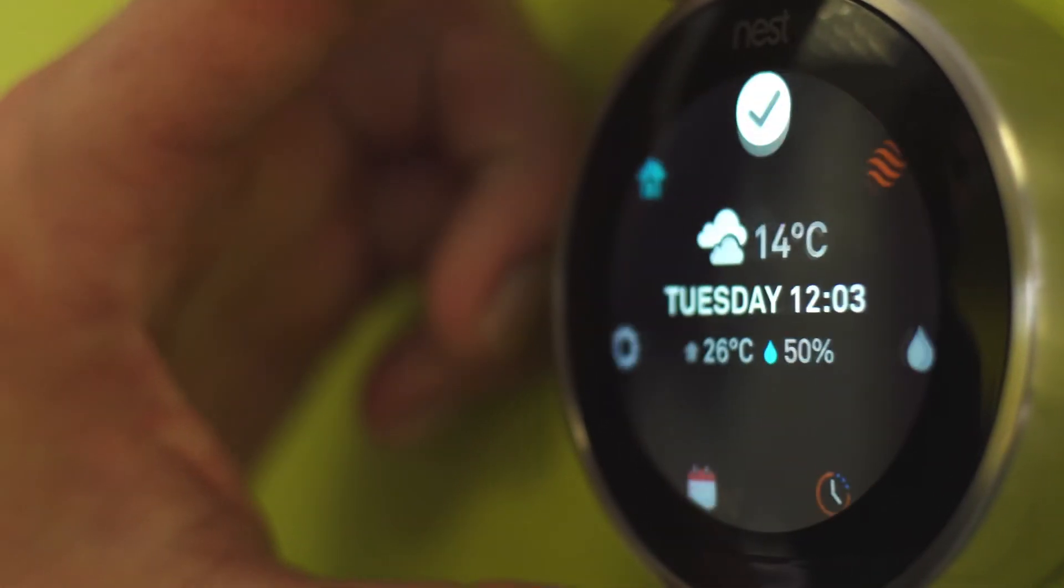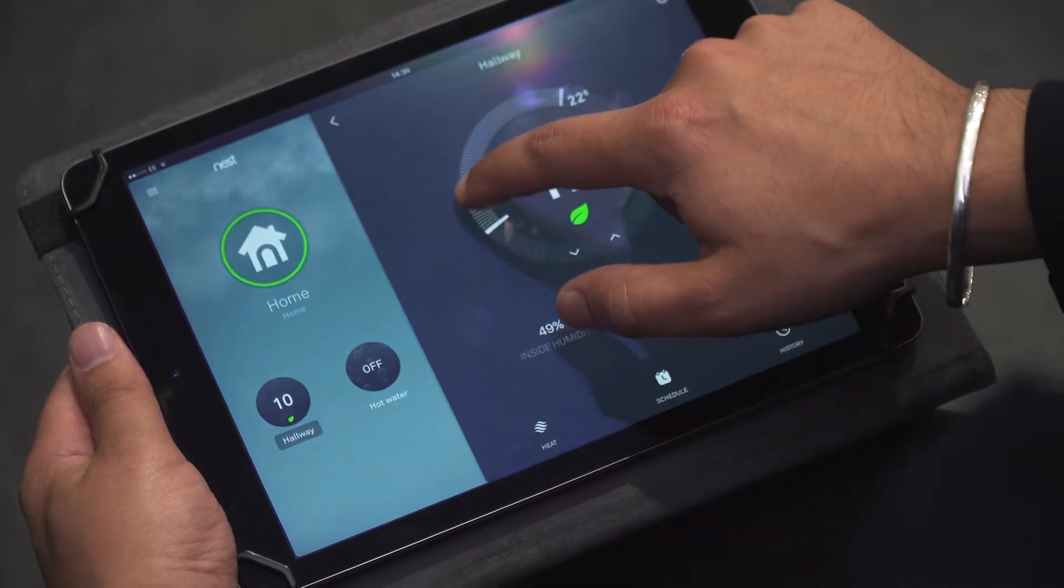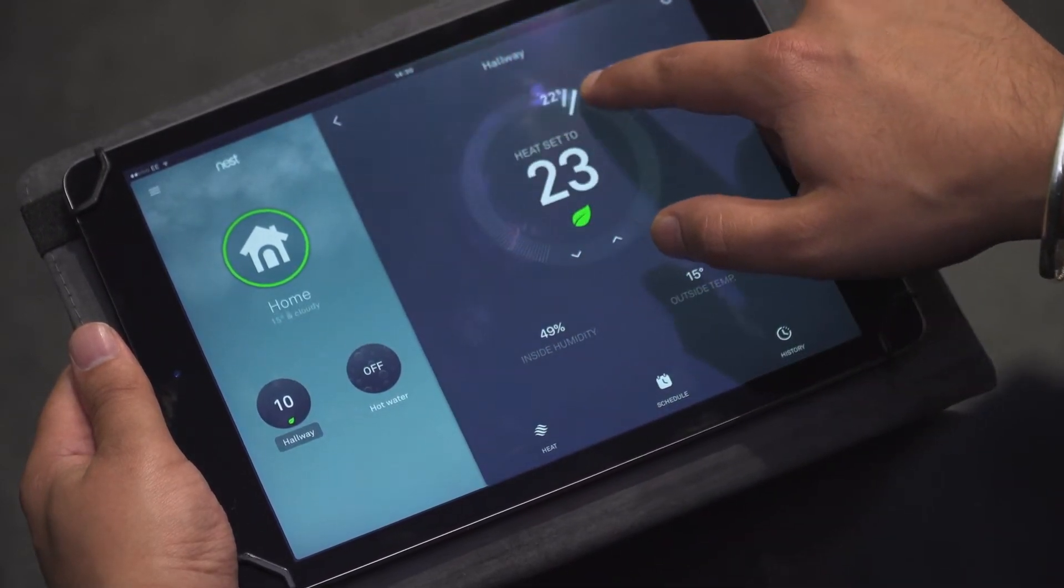Using your Nest app, you can adjust your Nest thermostat remotely if you are going to be away from home unexpectedly or have a change of plans.